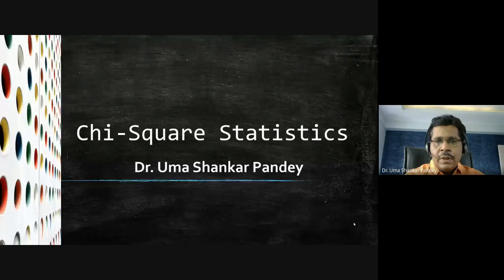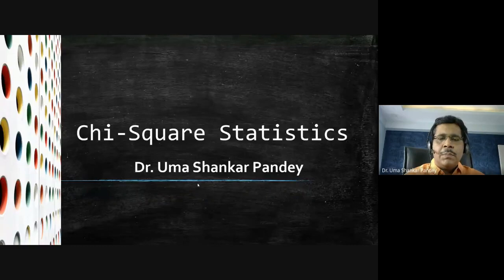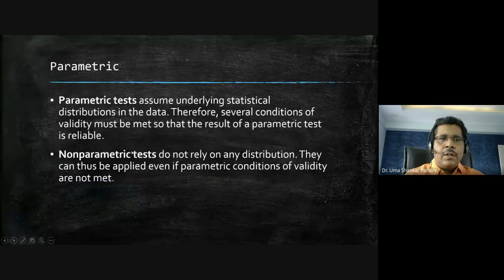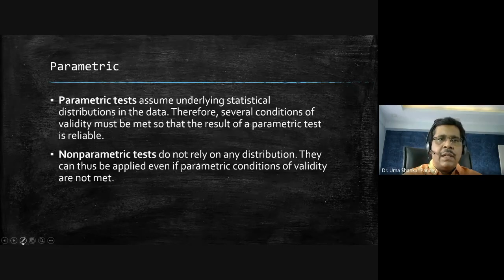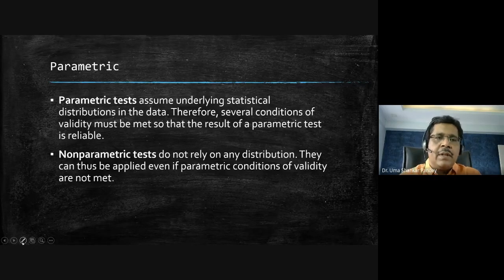Before beginning chi-square statistics, let's talk briefly about parametric and non-parametric tests, p-values, and alpha values. Parametric tests assume certain distributions in the data — especially a normal distribution — and other conditions specified by parameters like mean and standard deviation. Parametric tests apply to numerical variables, at least interval or ratio scale.